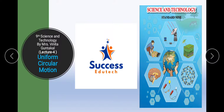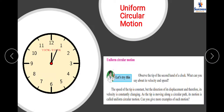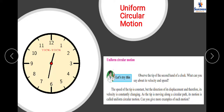Uniform circular motion is a type of motion. We already defined motion as the movement of an object whenever a force is applied. Can you see the clock over here? For a clock there is an hour hand, a minute hand, and a second hand. Consider this one as the second hand of the clock and observe the tip of the second hand.